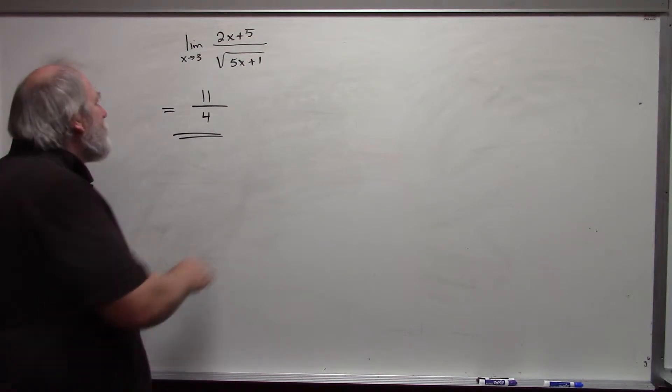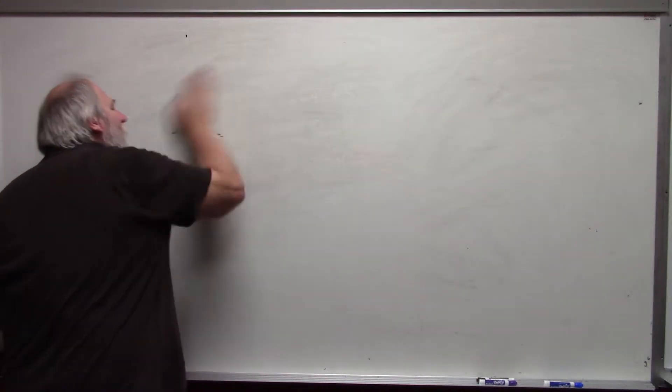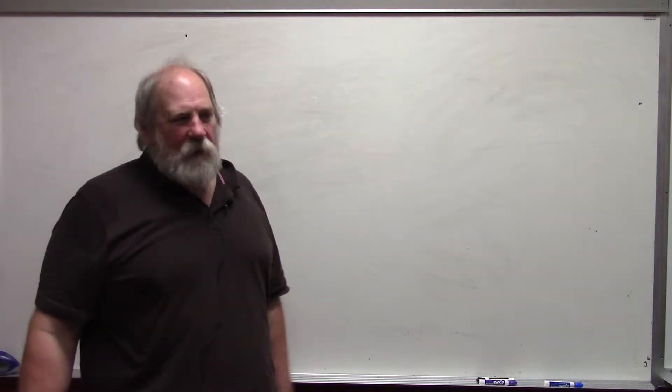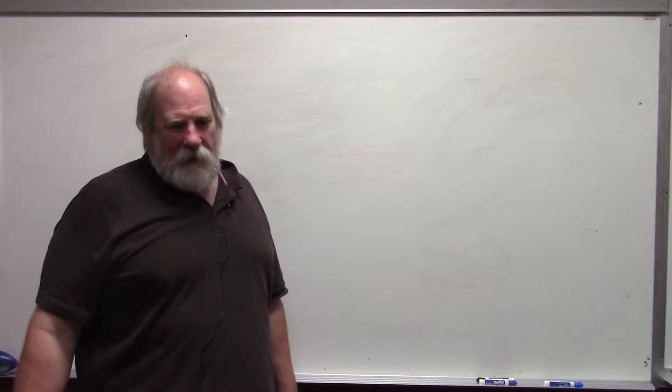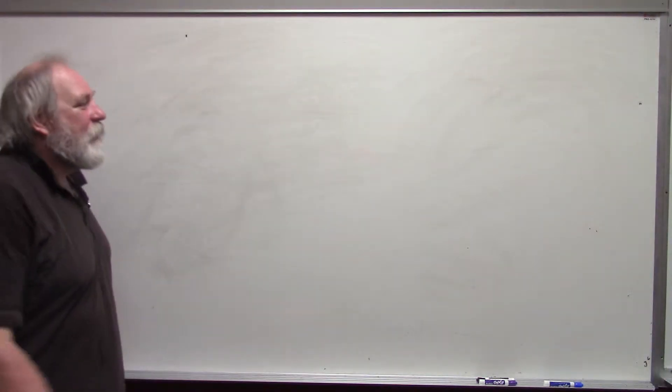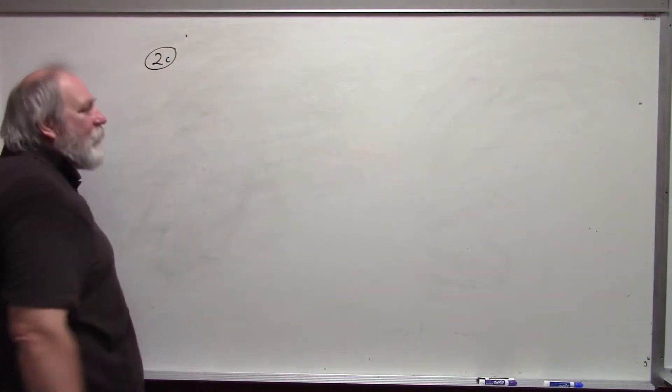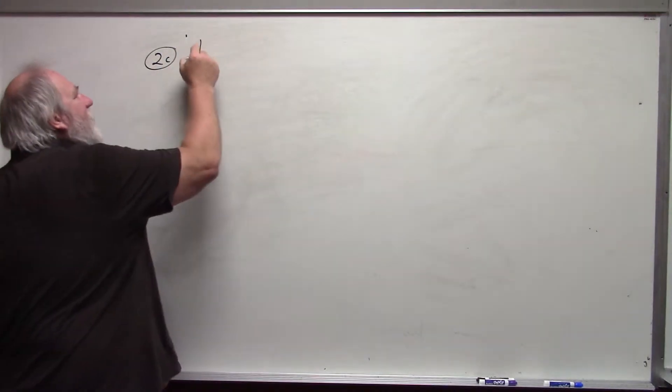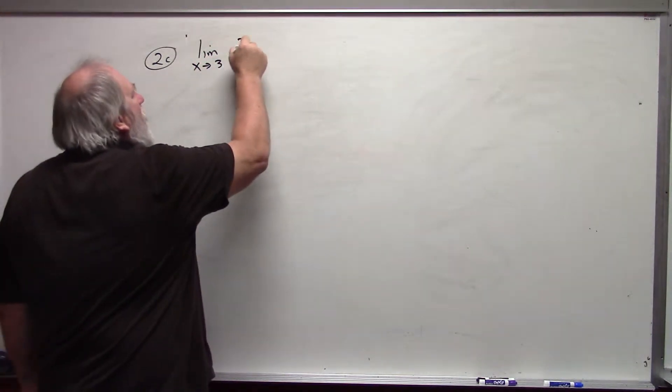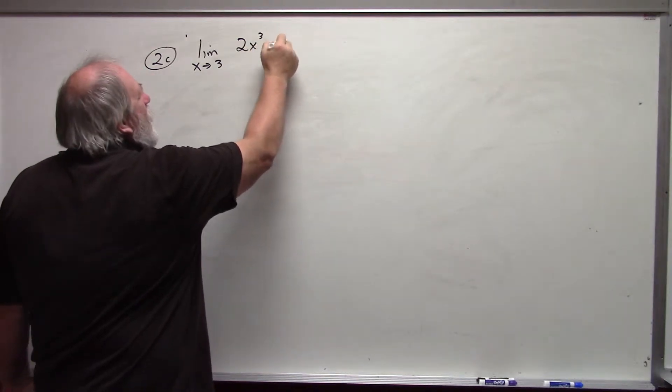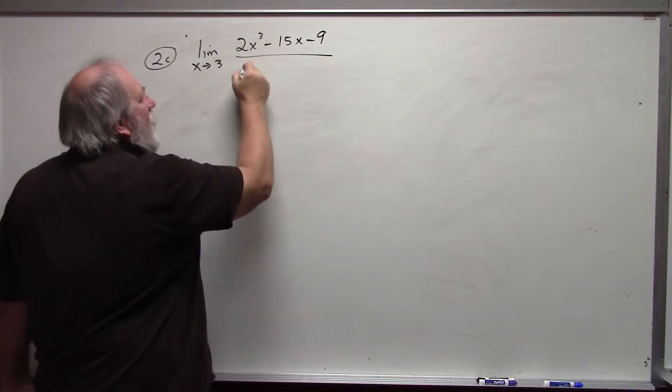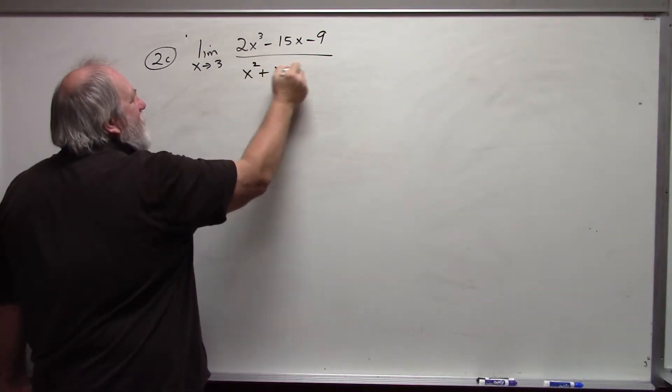My second example is one that you will find worked out in the problems, the examples that I did. Also, you have available all the homework type examples that are all worked out for you. This is problem 2c. And it is the limit as x approaches 3 of 2x cubed minus 15x minus 9 over x squared plus x minus 12.